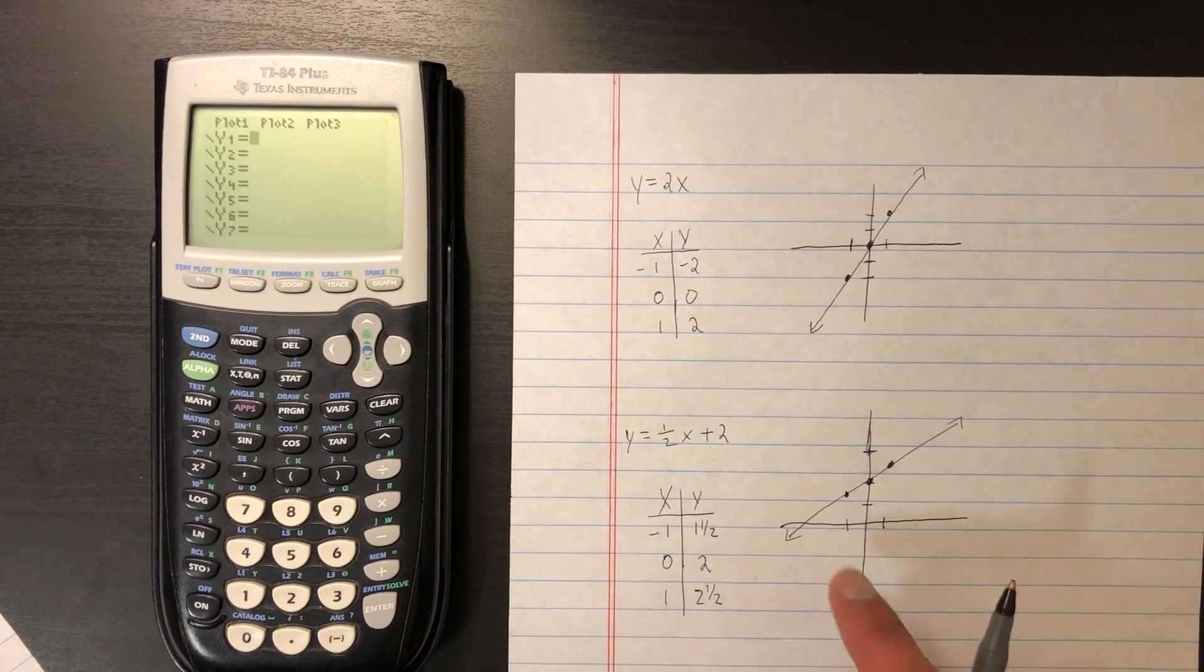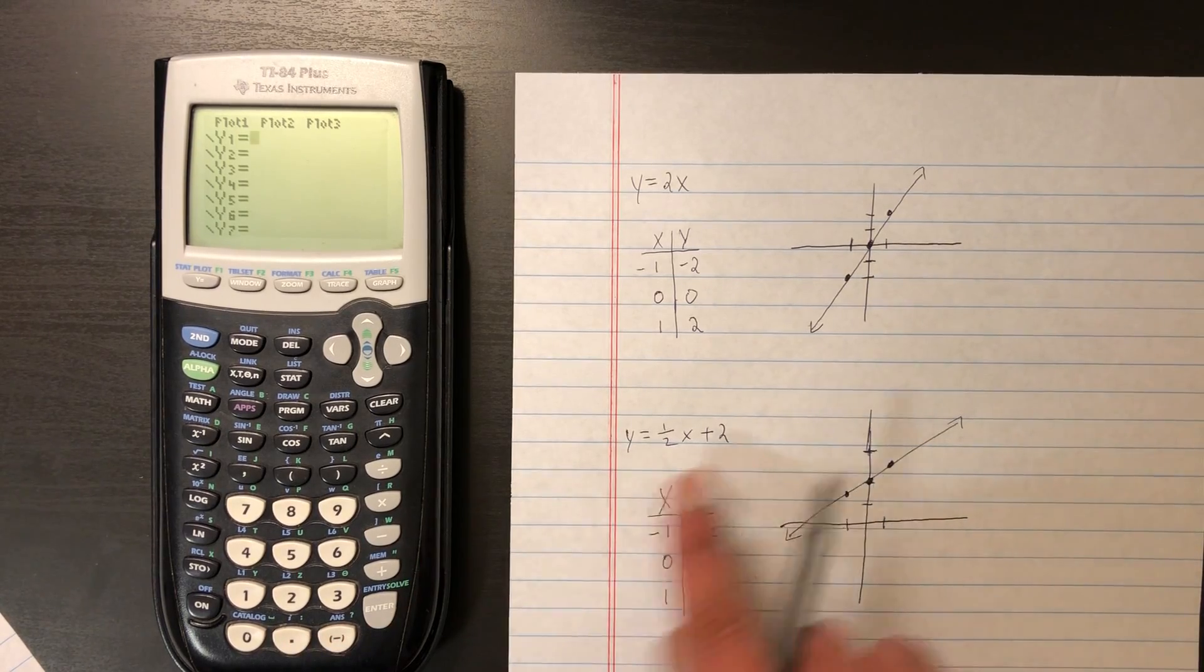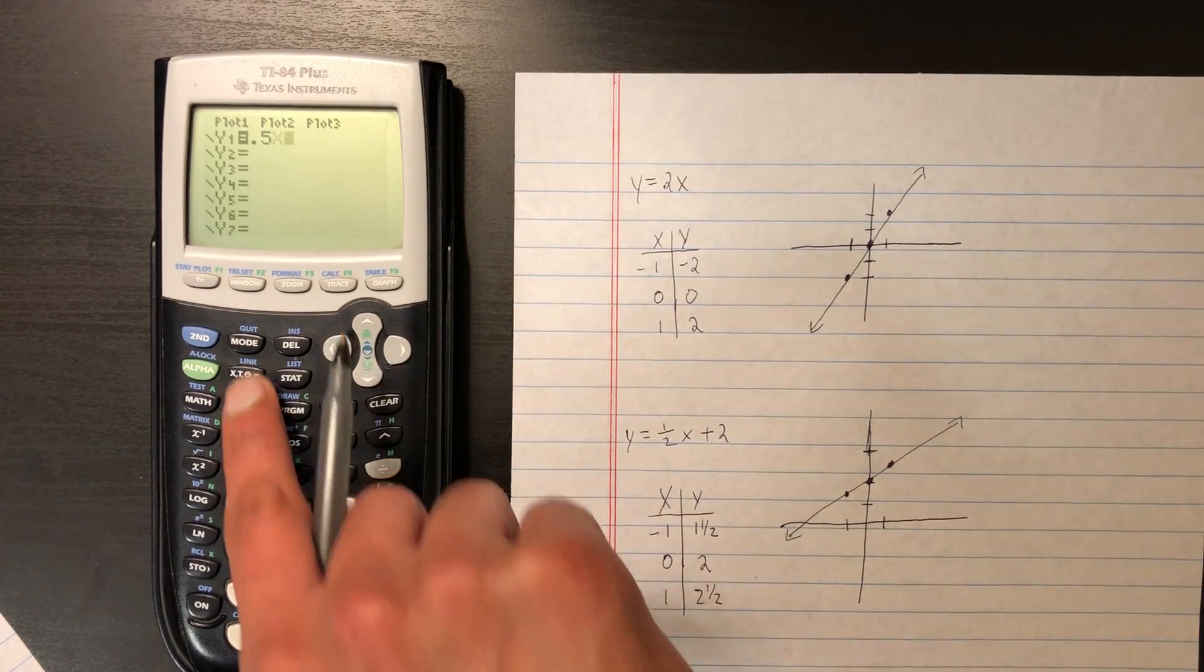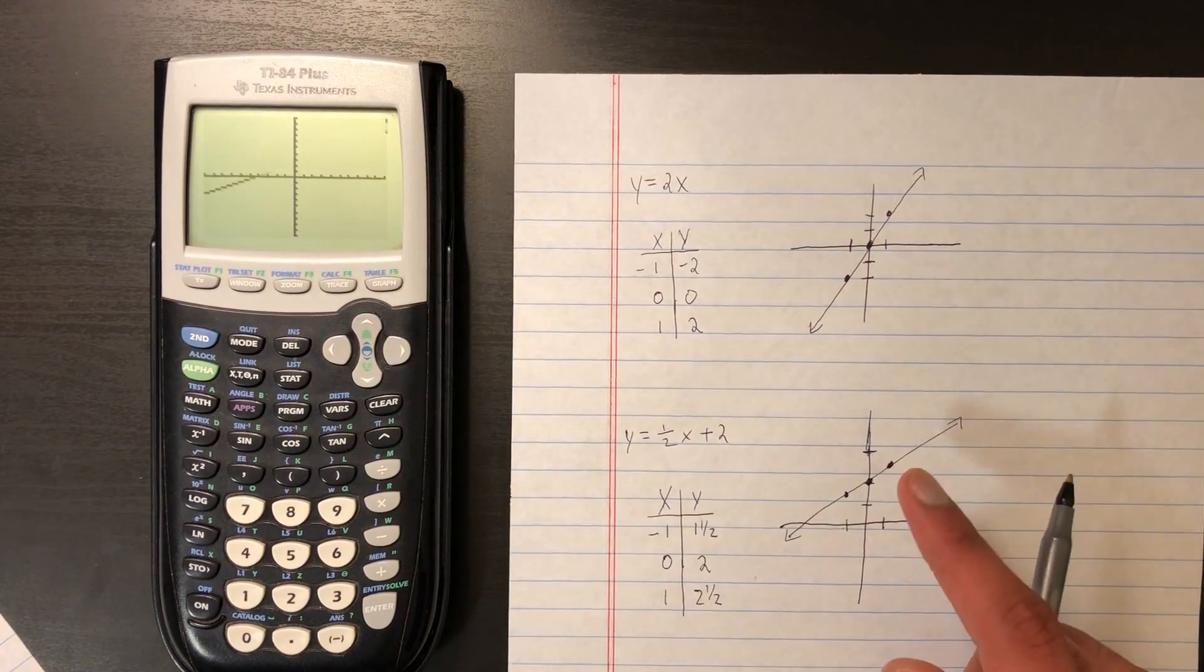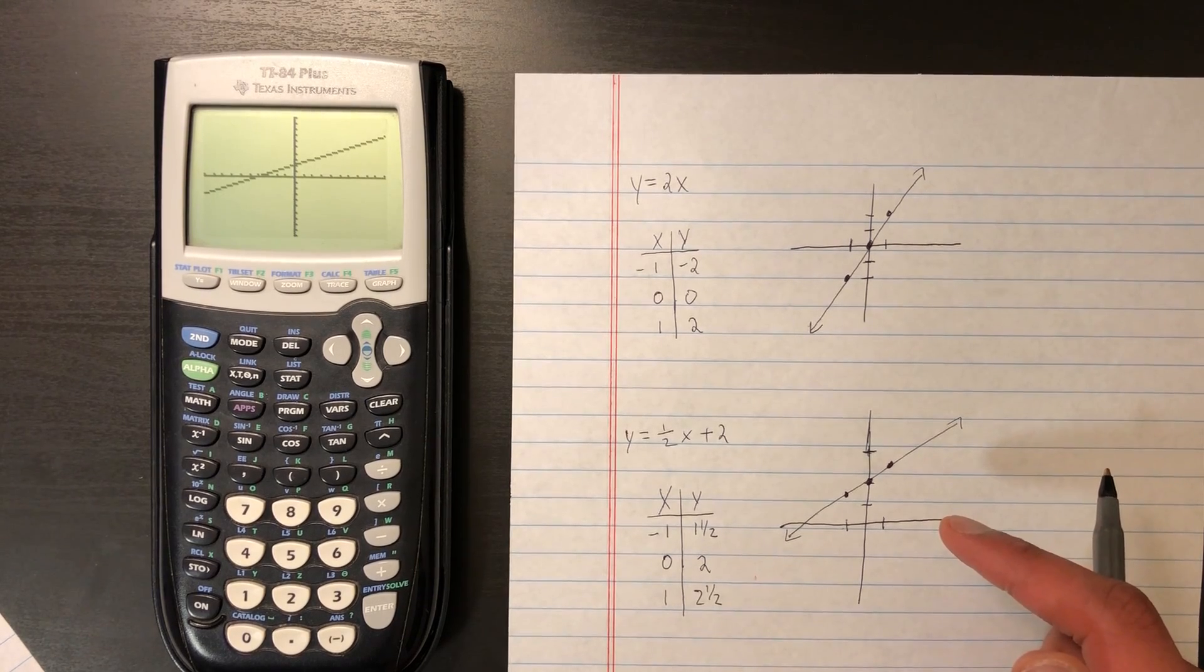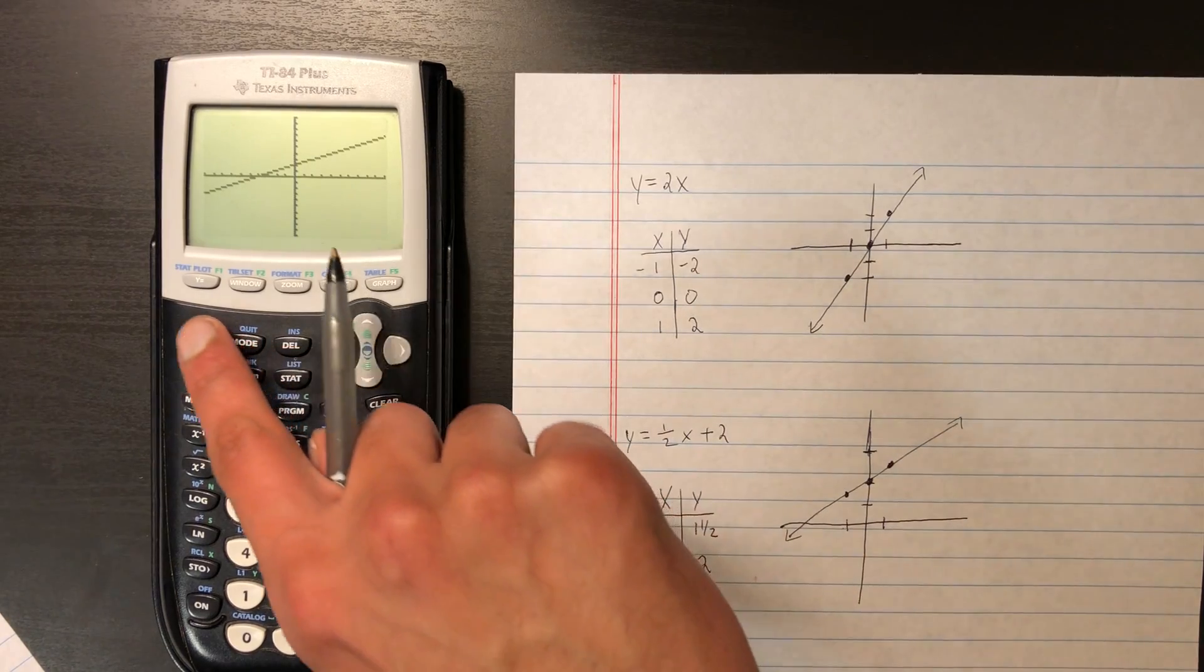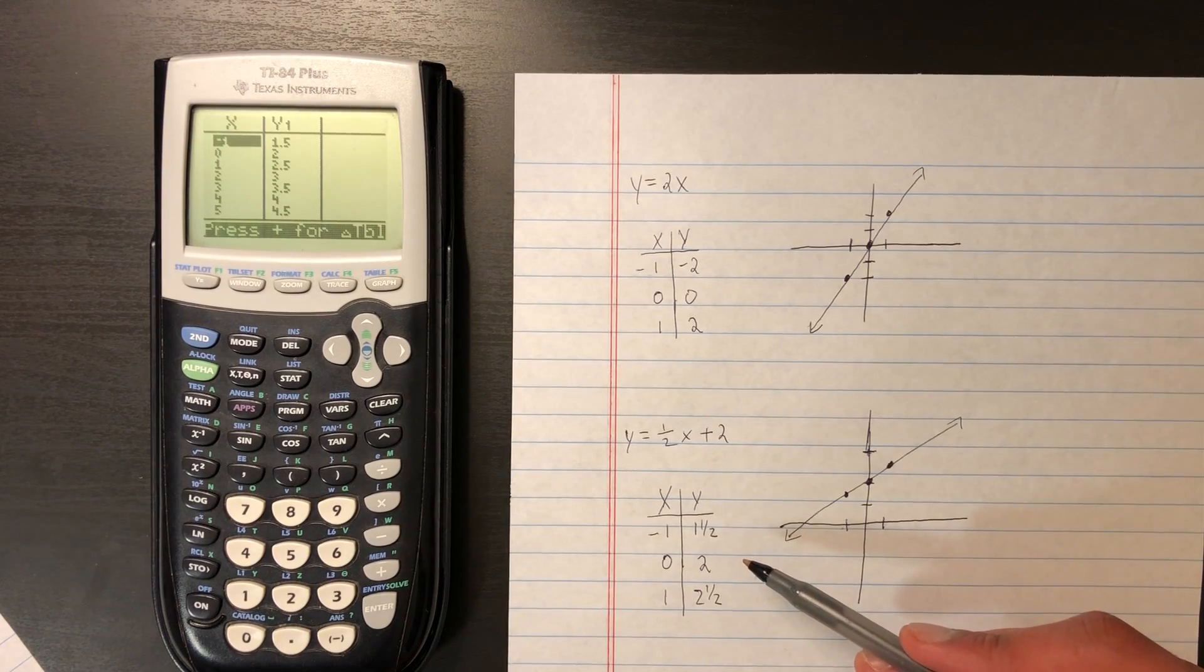Perfect. And let's see how this looks on the graphing calculator. So here, let's enter our equation. So 0.5, which is the same thing as 1 half, x plus 2. And then hit the graph button at the top. That's our graph of y equals 1 half x plus 2. And then we can go to the table values. And they're both the same. Awesome.